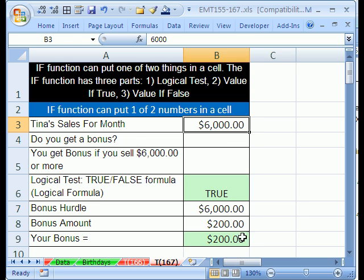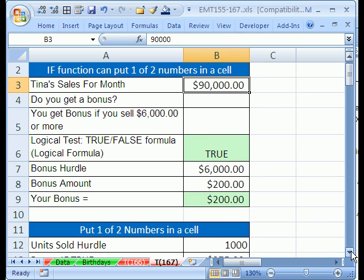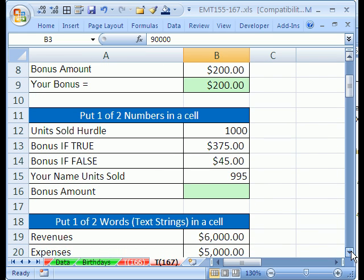Yeah, because we put a greater than or equal to, we have a nice boss. So if you get right on the hurdle, you get it. Now let's try above, 9,000. 90,000. So that's the easy way to learn the IF. Now that's the beginning. Now let's look at lots of other things you can do with the IF.